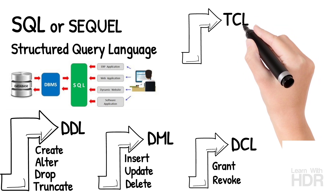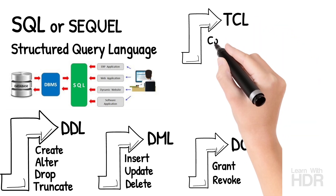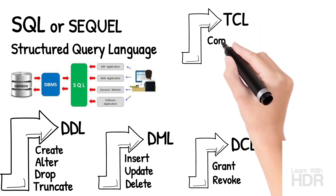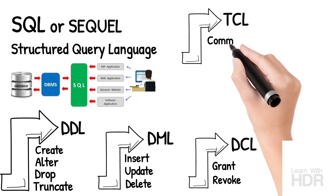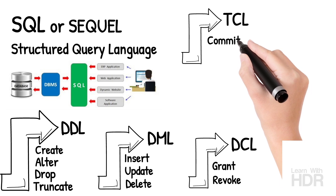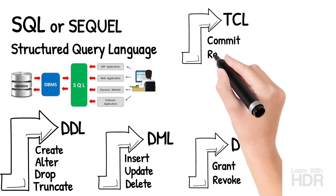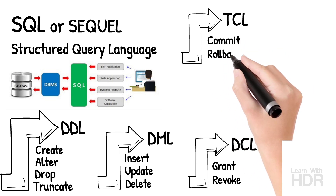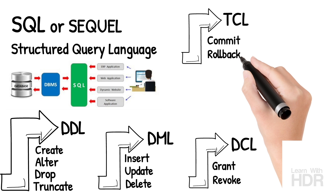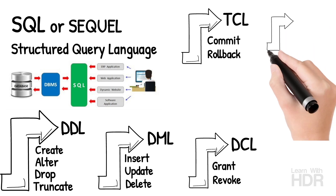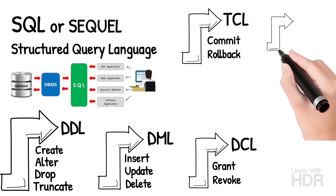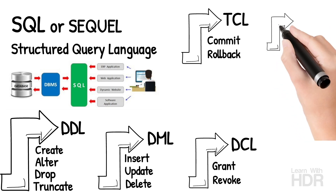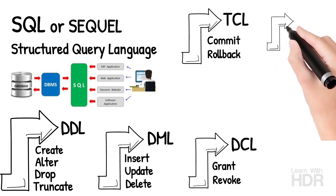The Commit command saves a transaction. The opposite command is Rollback, which undoes a transaction. DQL stands for Data Query Language, and includes the Select command.